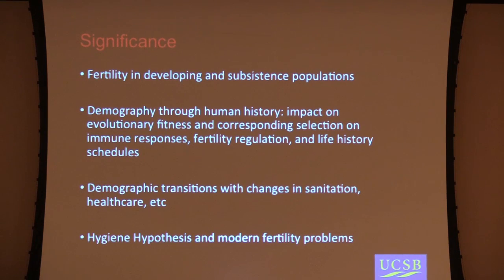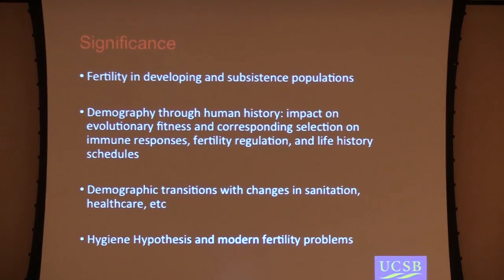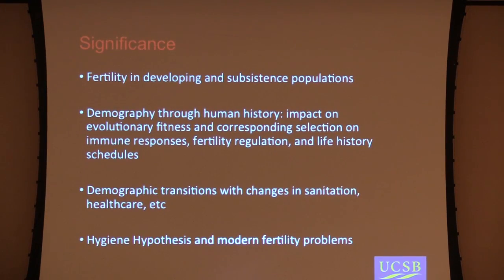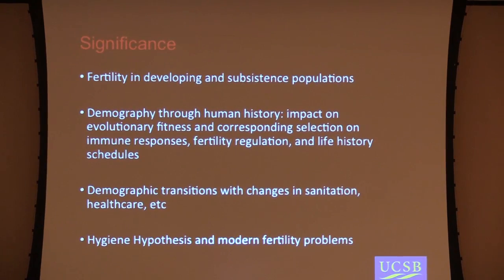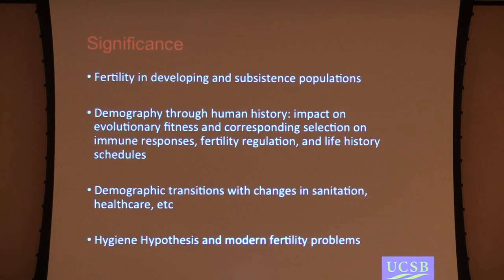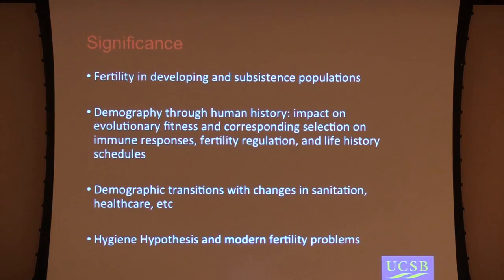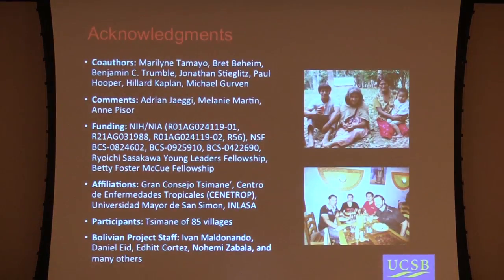What kind of significance does this have? It might tell us something we haven't really thought about regarding fertility in developing and subsistence populations, particularly as resources change and as we start to treat and reduce helminth infections — how that's going to affect fertility levels and likelihood of getting pregnant, and demography throughout human history and life history schedules. Possibly it might have implications for thinking about some modern fertility problems as they might relate to the hygiene hypothesis or the old friends framework.